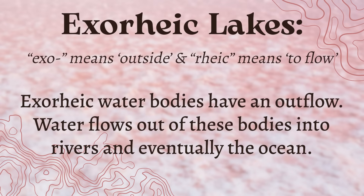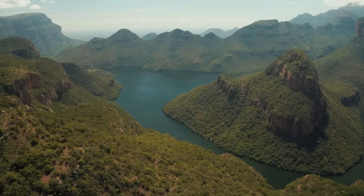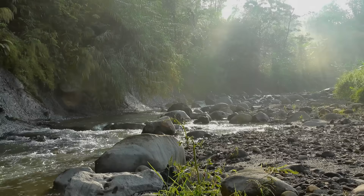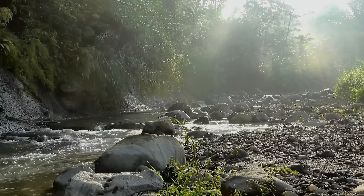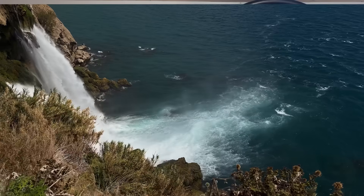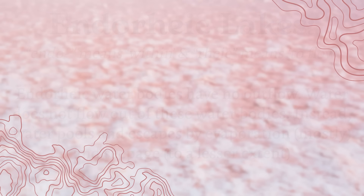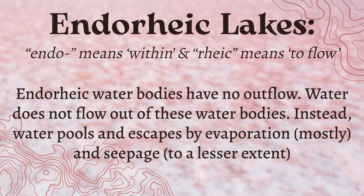97% of the Earth's surface water is exorheic — exo meaning outside, and raic meaning to flow. Runoff flows into streams, which flow into lakes, which flow into rivers, until eventually the water reaches the ocean. Endorheic basins, on the other hand, have no outflow — endo meaning within.